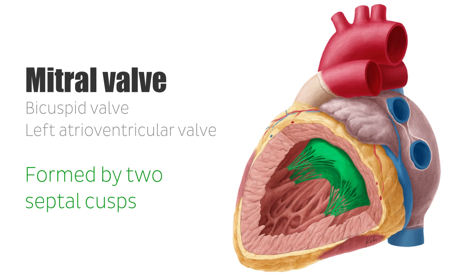The blood supply to the left atrium is governed by the left circumflex coronary artery, and it is drained by the oblique vein of the left atrium, which arises during embryonic development from the left side of the fetal superior vena cava.